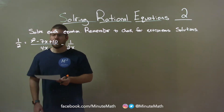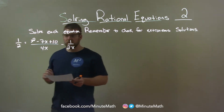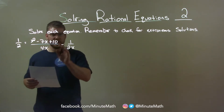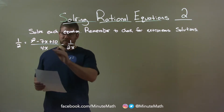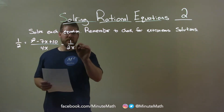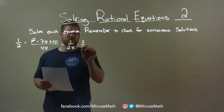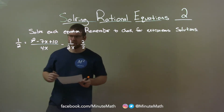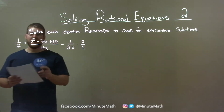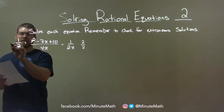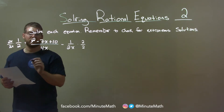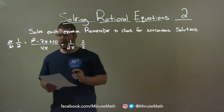I want to have the same denominator across the board, and 4x looks the most complex. Using the 2x term, it can become a 4x if I multiply by 2 over 2 — 2 times 2x, that's 4x. And 1 half can become over 4x if I multiply by 2x over 2x, since 2x times 2 is 4x.